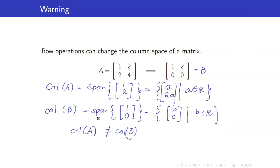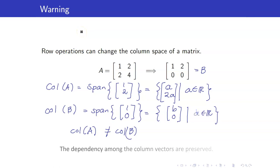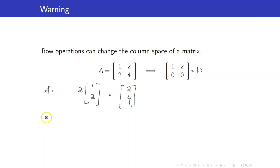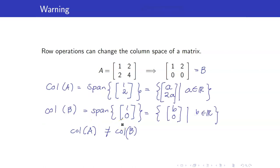Although the column spaces of a matrix and its row-equivalent matrix are not the same, what is true is that the dependency relationships between the columns do not change when we perform row operations. For example, in matrix A the second vector (2, 4) is twice the first vector, and in its REF B the second vector (2, 0) is also twice the first vector (1, 0). So how do we get a basis for the column space of a matrix if the column space changes under row operations?